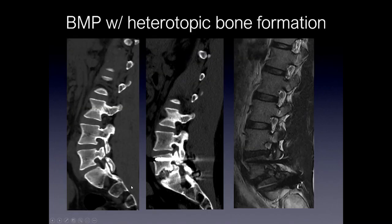Here's an example of bone morphogenetic protein placed with heterotopic bone formation. This patient had a pars interarticularis defect with a little bit of spondylolisthesis, ultimately went on to fusion, and some bone morphogenetic protein was placed in the spacer. You can actually see some heterotopic bone formation occurring here. This can cause symptoms because of significant narrowing — it can extend into the neural foramina and spinal canal. In this case, it caused significant foraminal stenosis and pressure on the nerve root, and this patient had to be reoperated on.